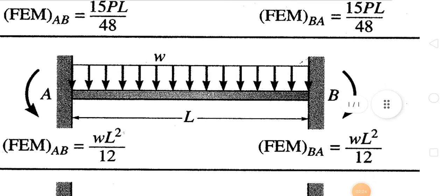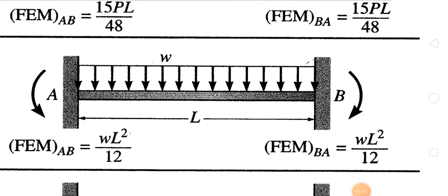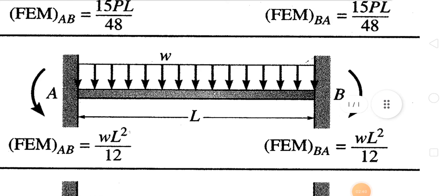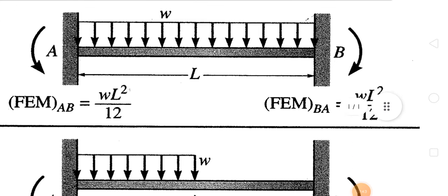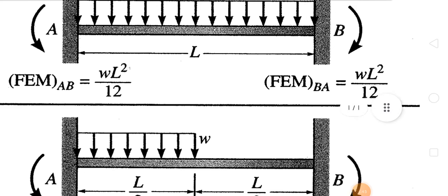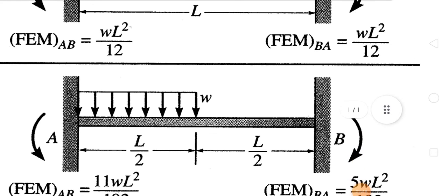There is another condition when there is a uniformly distributed load W acting over the whole span. The fixed end moment at point A (left side) will be WL²/12, and on the right side (B end) it will also be WL²/12 — the formula WL²/12 applies on both sides.